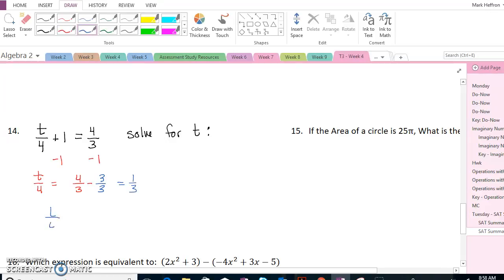So now I have t over 4 equals 1 over 3. I can get rid of the fraction by multiplying by 4 over 1 on both sides. So on the left I just have t and on the right I have 4 over 3. That would be the final answer.